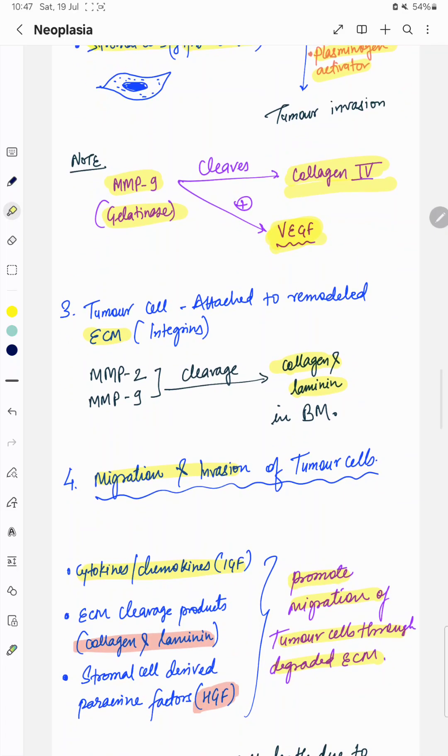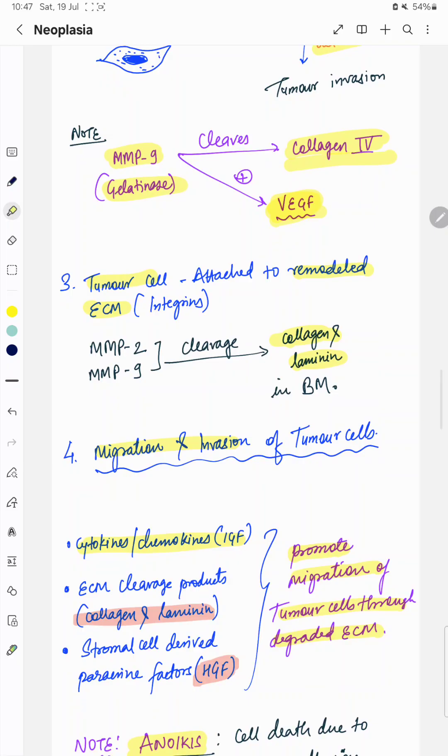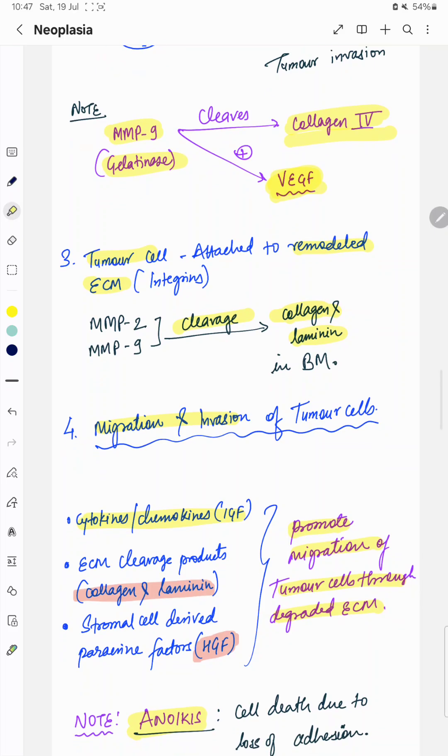After degradation of extracellular matrix, these tumor cells attach with the remodeled extracellular matrix and travel through the degraded matrix. MMP-2 and MMP-9 cleave collagen and laminin in the basement membrane, and this breakage of basement membrane will facilitate entry of tumor cells into vascular channels.